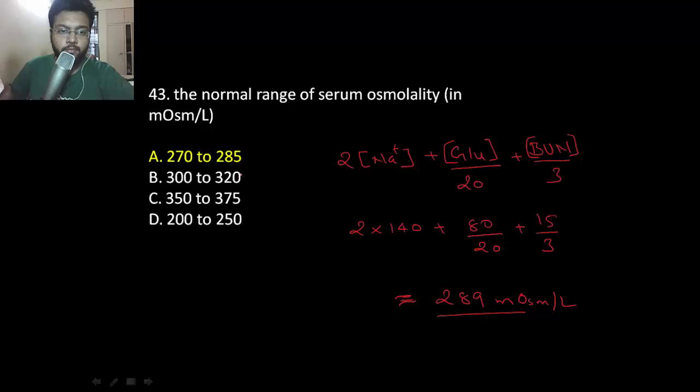The normal range for serum osmolality is... if you want to know how that value came, here is the formula: you can plug in the values and you'll get the answer 289. 2 times sodium concentration plus glucose divided by 20 plus blood urea nitrogen divided by 3. If you plug in the values you'll get 289, so the best option from these values is A.